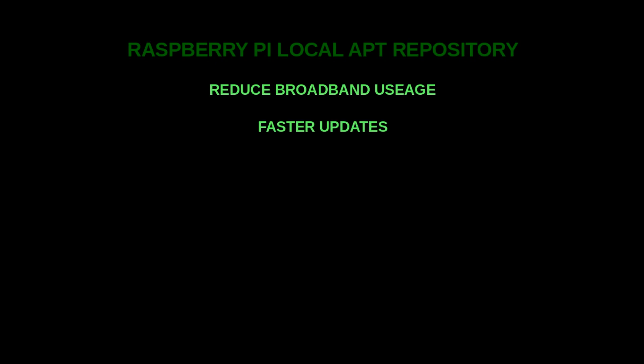It also provides faster updates. For example, your local network might be a 1 gigabit network, whereas your broadband speed might be 100 megabits. So for the download period of the update it will operate a lot quicker, and if you've got a lot of Raspberry Pis that will reduce the amount of time needed to do your updates.